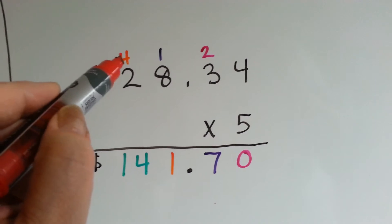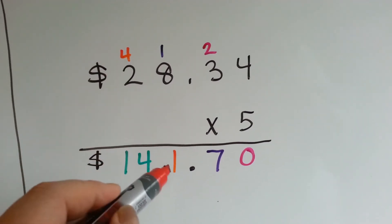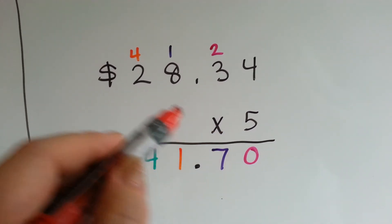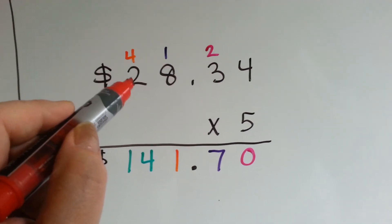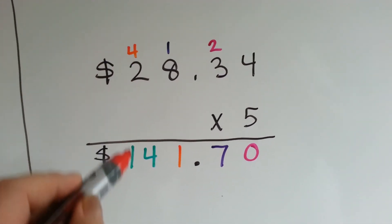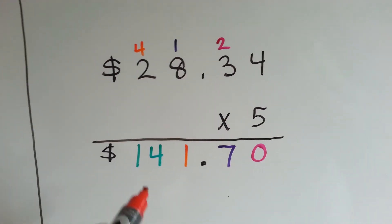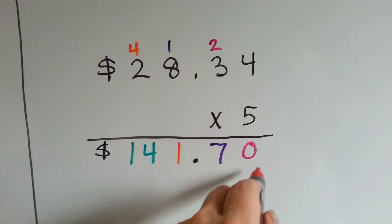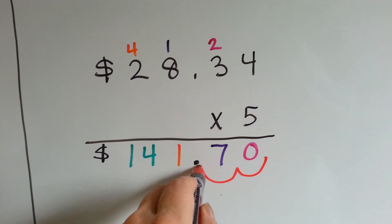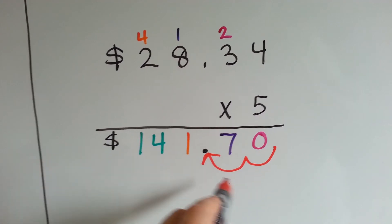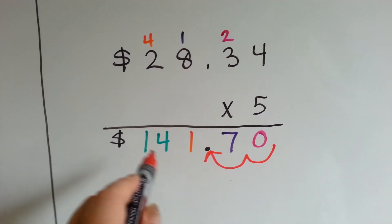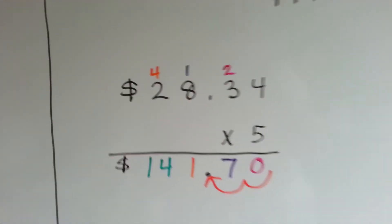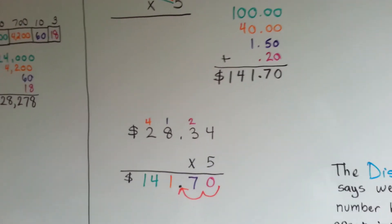5 times 8 is $40, plus 1 is $41. We carry the 4 and put the 1 down. 5 times 2 is $10, plus 4 is $14, and we just put it down here. We make sure our decimal space is 1, 2 places over for money, and we get $141.70, just like we did there.